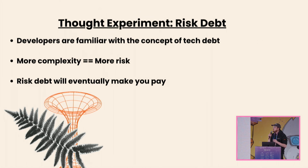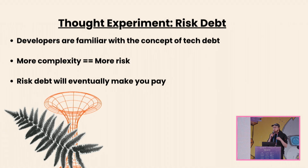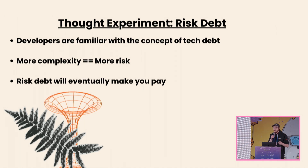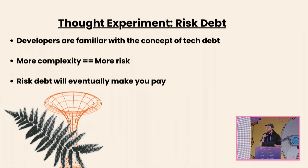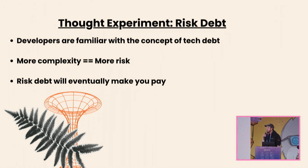The concept here is risk debt. Developers are familiar with the concept of tech debt — you add a feature, you add more logic, you add some huge epic, but you need to go back and clean up the code, refine things. I think the same thing goes for complexity. When you add more complexity, you add more risk, and that risk debt gets built up over time. You need to be able to manage it, because risk debt will eventually make you pay, whether it's through a vulnerability or some dependency that has some other risk associated with it that's going to have a bad effect on your protocol and your users.